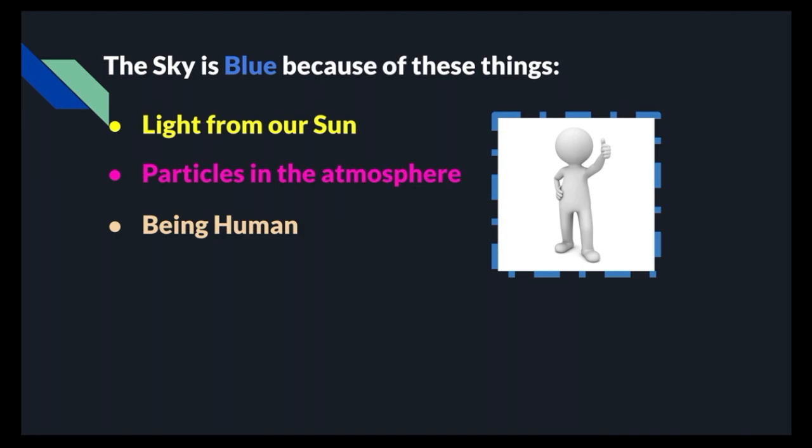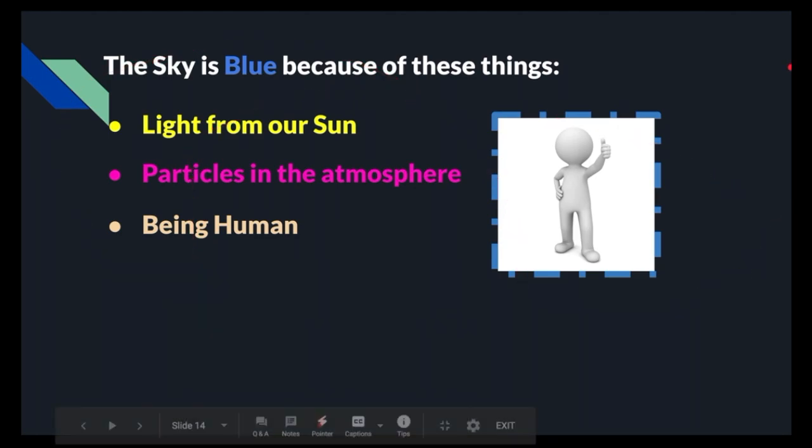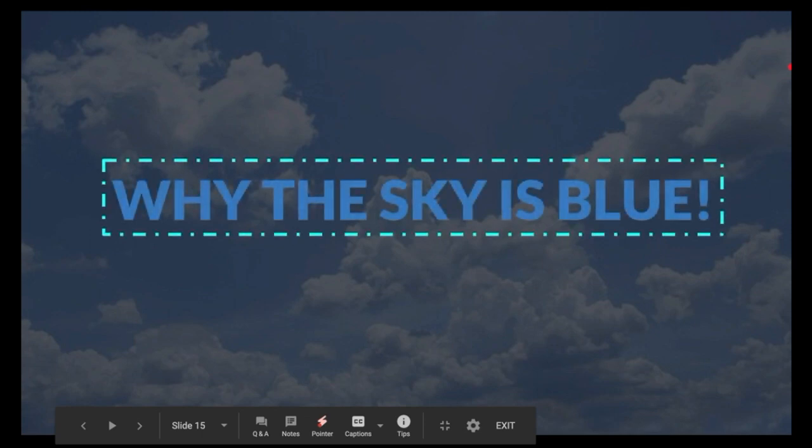We just don't catch the violet color being scattered around like crazy in the sky. We focus more on the blue. Now, these things were very important as they tell us why the sky is blue.